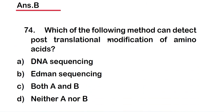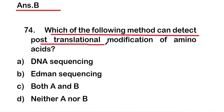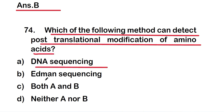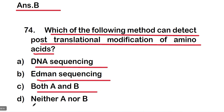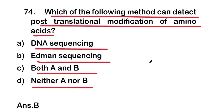Next question: which of the following methods can detect post-translational modification of amino acids? Options are DNA sequencing, Edman sequencing, both A and B, or neither A nor B. The right answer is option B — Edman sequencing is the method that can detect post-translational modification of amino acids.